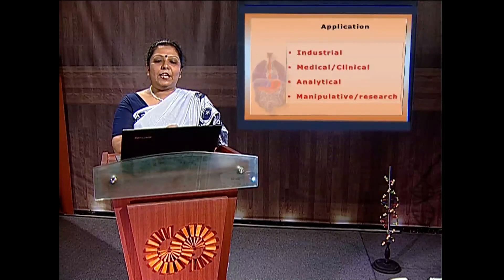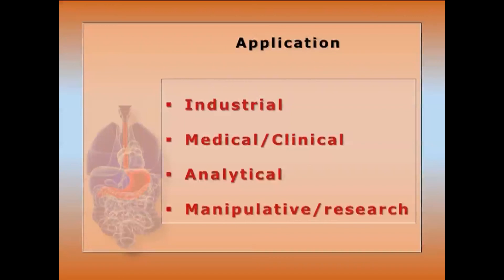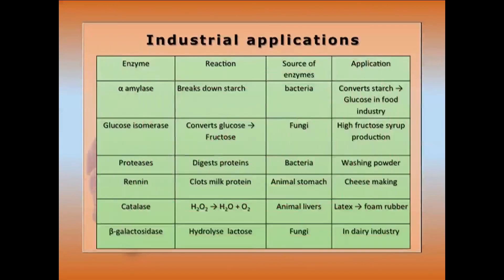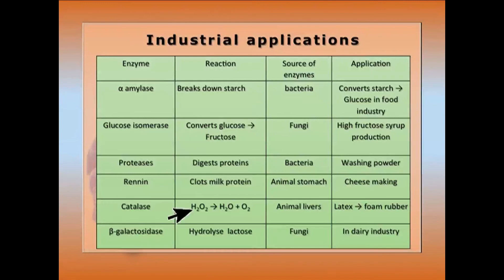Industrial applications: alpha-amylase from bacteria breaks down starch to glucose for the food industry. Glucose isomerase from fungi converts glucose to fructose for high-fructose syrup. Protease from bacteria digests protein for washing powder. Renin from animal stomach clots milk protein for cheesemaking. Catalase from animal liver converts H₂O₂ to H₂O and O₂, used in the rubber industry to convert latex to foam. Beta-galactosidase from fungi hydrolyzes lactose for the dairy industry.